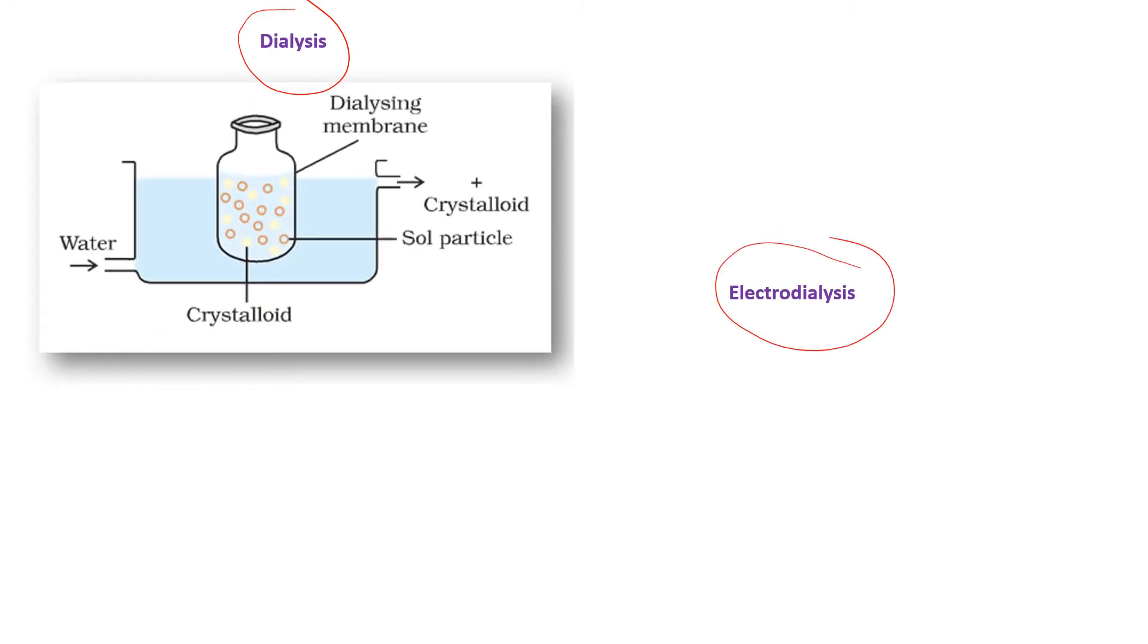we have a bag or a dialysing membrane that is filled with a sol that is not pure. Here is the impurities, the yellow one is the impurity ions present in the solution.